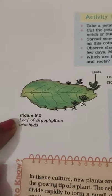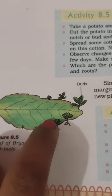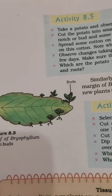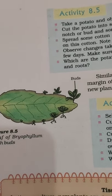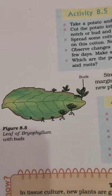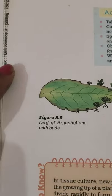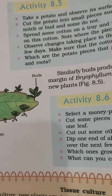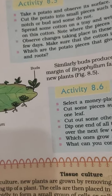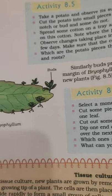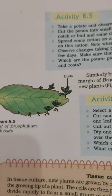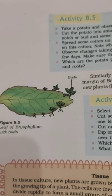Another example is the bryophyllum plant. We can see new plants arising from its leaf itself. The bryophyllum plant can reproduce by vegetative propagation using either a piece of its stem or its leaf. If we drop a bryophyllum leaf, new plants arise from the leaf itself. If we break any stem of the bryophyllum plant, a new plant can grow from it within a week.